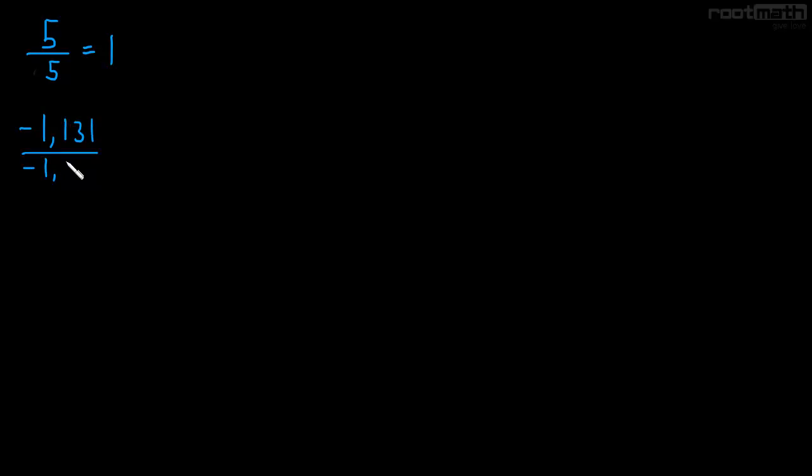Any number divided by itself is just 1. So, negative 1,131 divided by itself, again, is just 1.